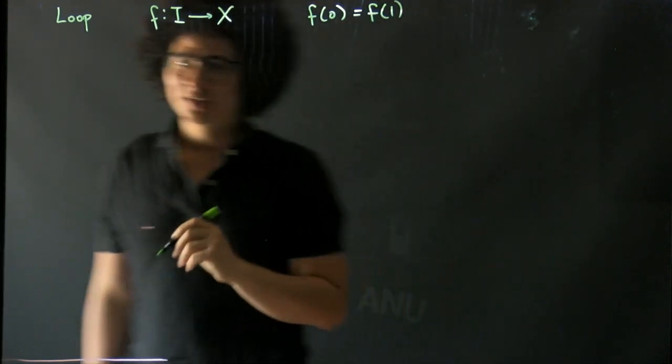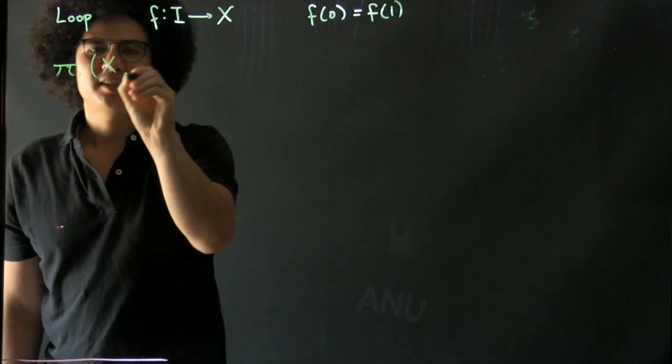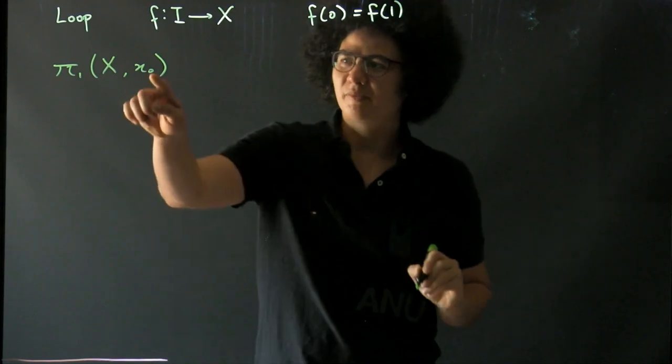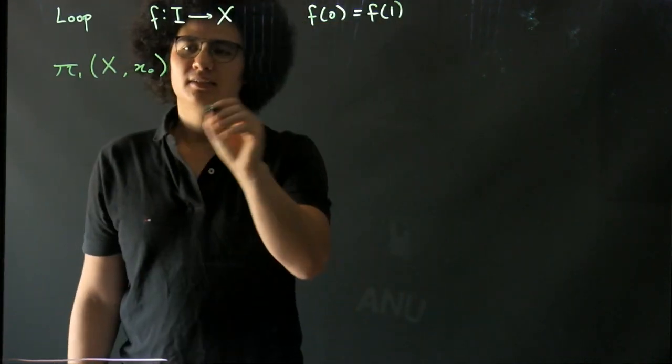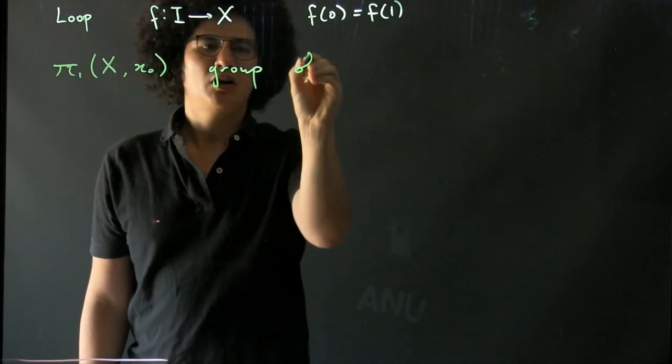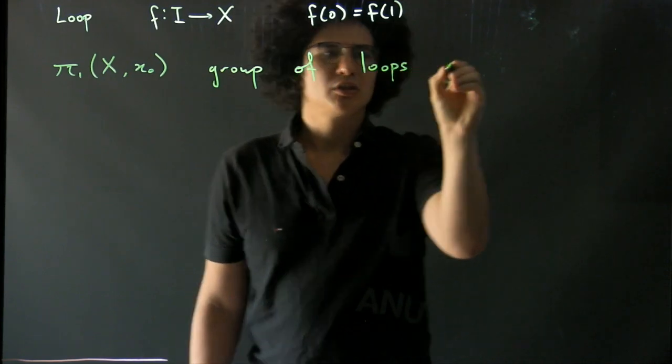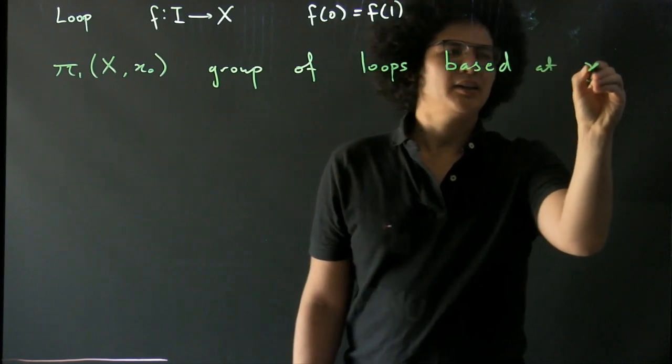Okay, now we can define the fundamental group. π₁ of a space X with base point x₀, so some x₀ is some element of X, is the group of loops based at x₀.